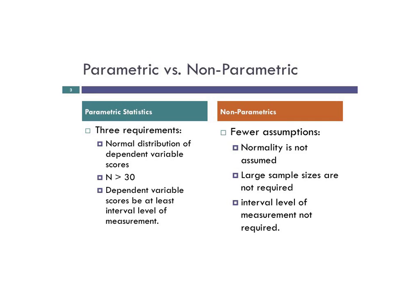We are going to continue our discussion about nonparametrics, moving into the Wilcoxon signed rank nonparametric analysis. This is the equivalent of a repeated measures t-test. The major focus is that nonparametrics don't have to meet some of these harder, intense assumptions. Instead, we can have fewer assumptions, like lack of normality, smaller sample sizes, and in the case of today, the dependent variable is not going to meet interval level of measurement — we're going to have an ordinal dependent variable.